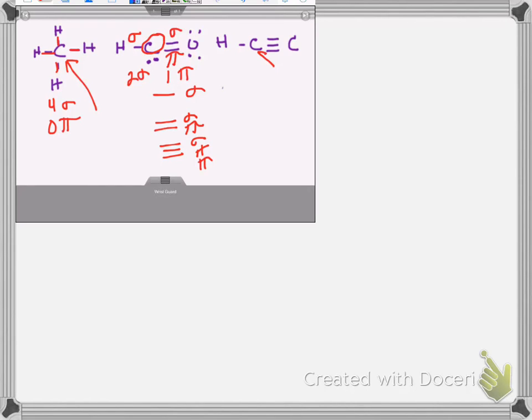If I look around this carbon atom, I have 1 sigma bond. In this triple bond, the first is a sigma, and the second and third are pi. So I have 2 sigmas and 2 pis. I hope that helped.